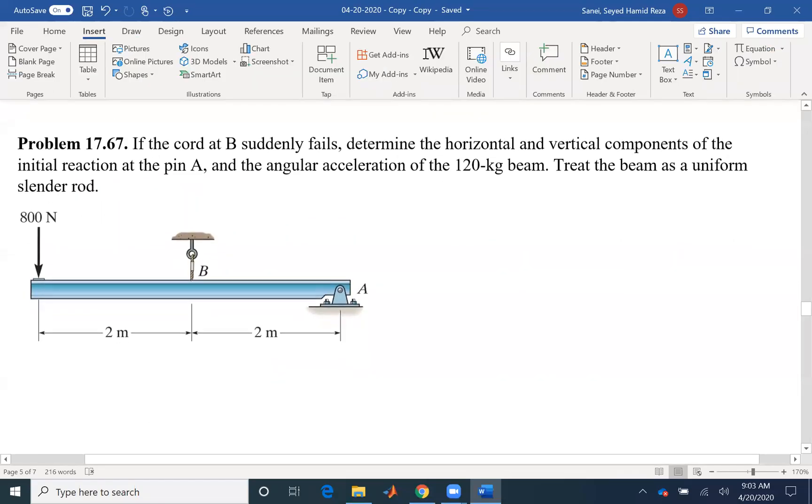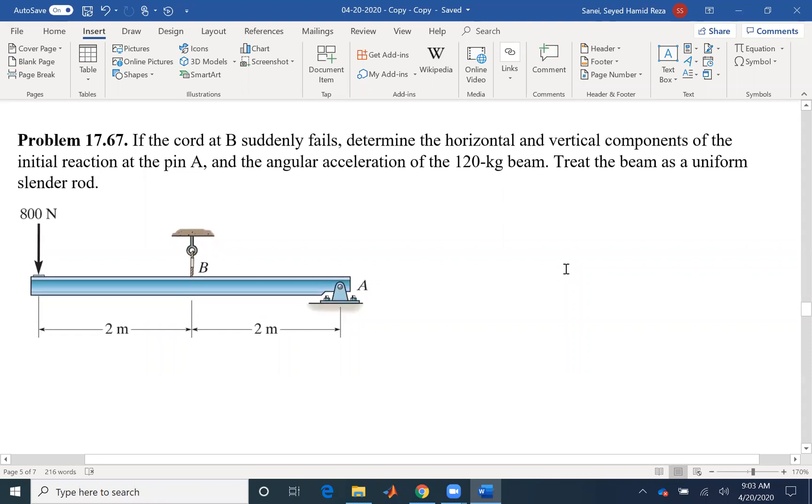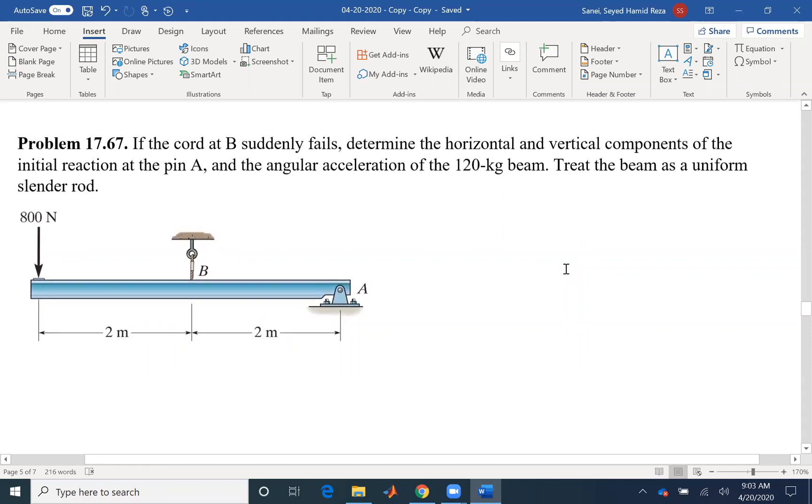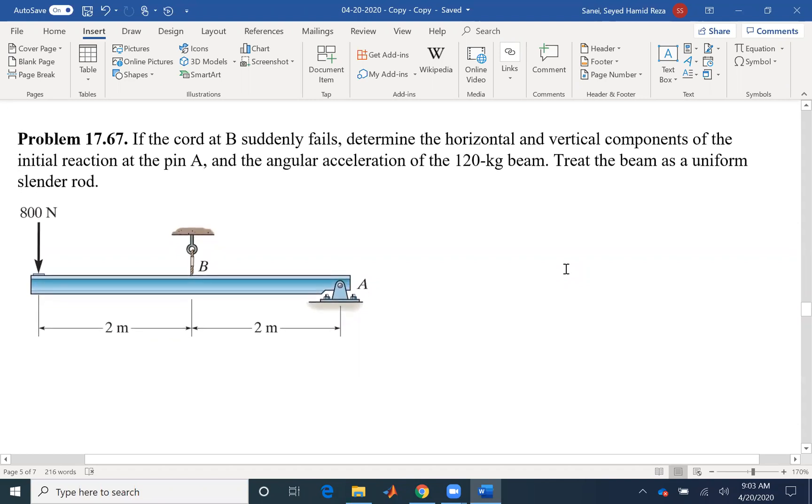Hello, everyone. I'm going to solve problem 67 of chapter 17. If the cord at B suddenly fails, determine the horizontal and vertical components of the initial reaction at the pin A.